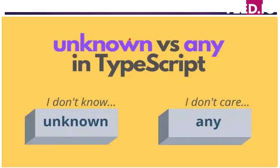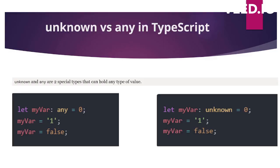Hello everyone. In this video, let's eliminate the confusion between unknown and any in TypeScript. As we all know, in TypeScript everything is typed — whatever variable we are creating, the function argument we are passing, or the return type of the function, all values have a certain type.